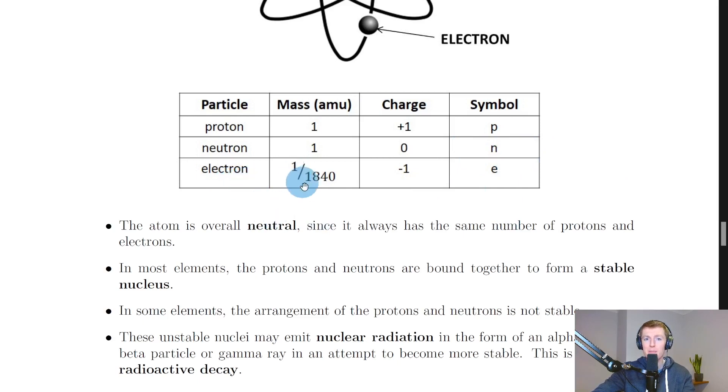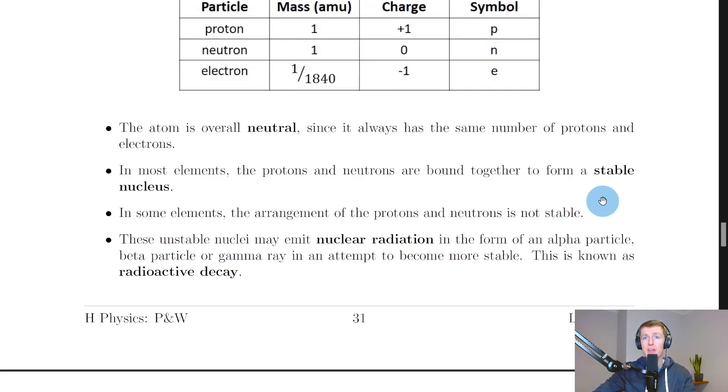For the electron, we say its mass is one divided by 1840 atomic mass units. Its charge is minus one because electrons are negatively charged, and the symbol is a lowercase e.